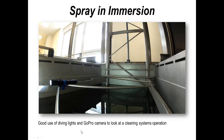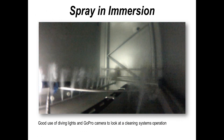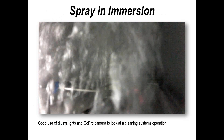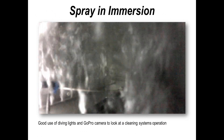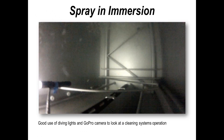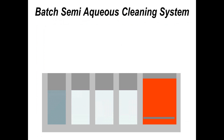This video shows an example of a batch cleaner where we've lowered the boards into the cleaner. What you can see, based on my GoPro camera, is spray under immersion — a mechanical method of assisting the removal of flux residues from the printed circuit board. This type of system can also use ultrasonic energy. From those stages, we progress through, and then finally go into the drying stage, where boards are held for sufficient time to evaporate any remaining moisture.